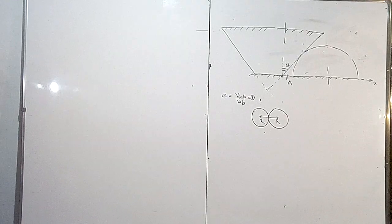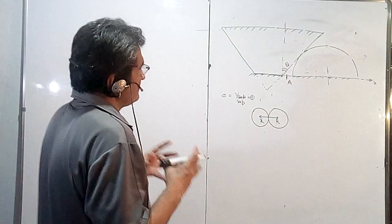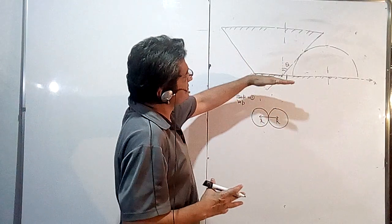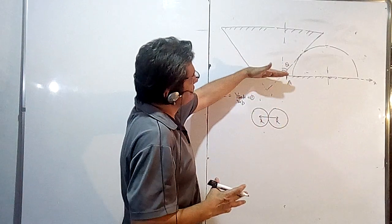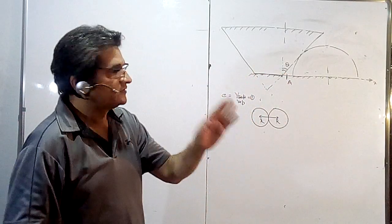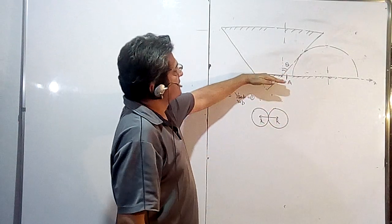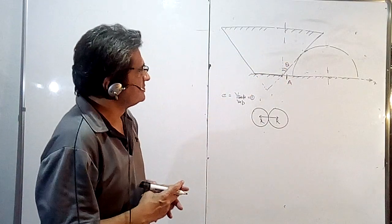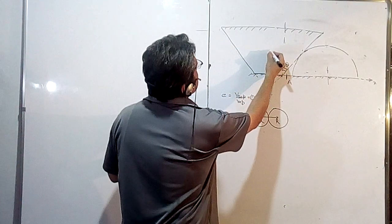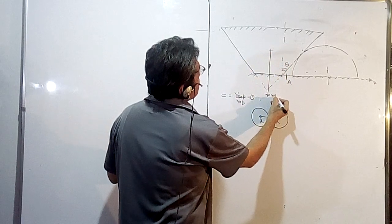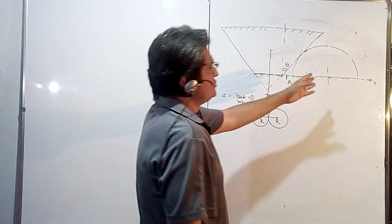In this lecture we will solve the problem related to collision between a hemisphere and a truncated wedge. A truncated wedge means part of the wedge has been cut, so this is like a triangle if you see the cross-section. This part has been cut and it is placed in an inverted position, and its weight is given as mg.